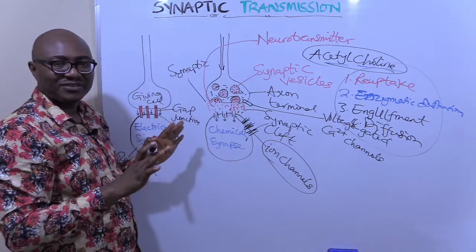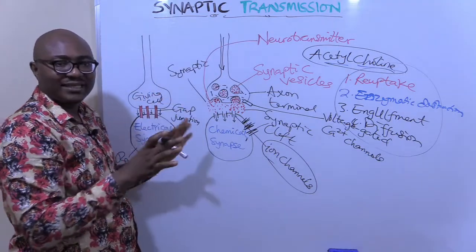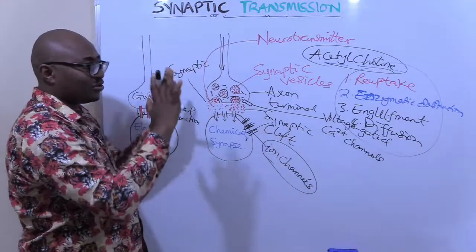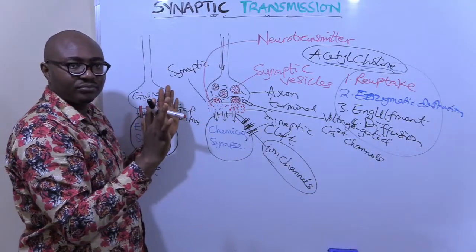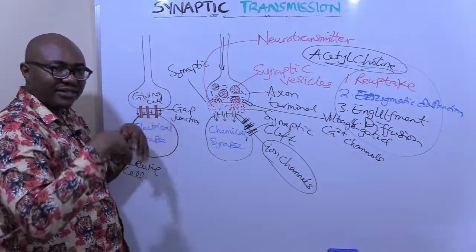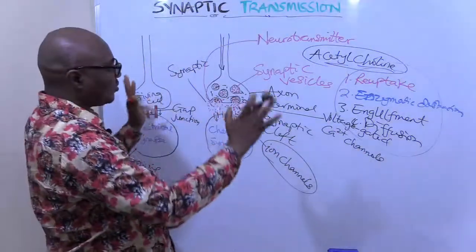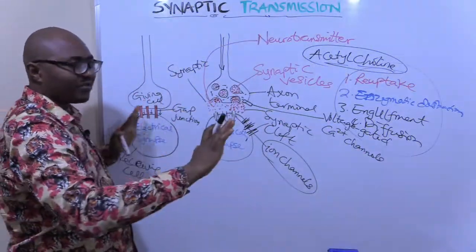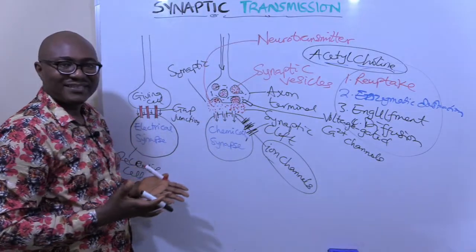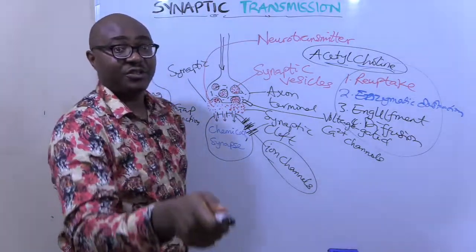So that's synaptic transmission. There are different types of neurotransmitters — acetylcholine is just used as one example. There are different classes of neurotransmitters you can read up. This is basically what you need to know about synaptic transmission. I'm going to see you in the next video.